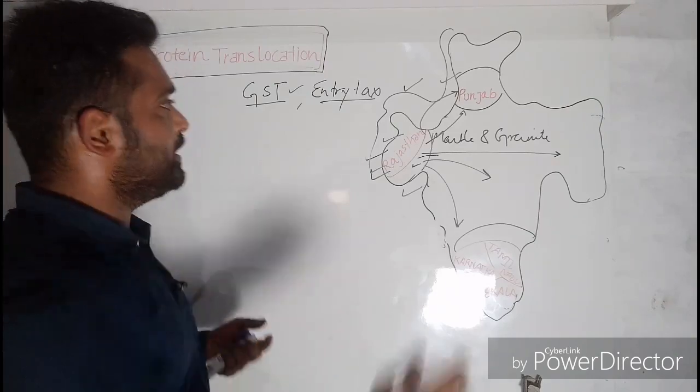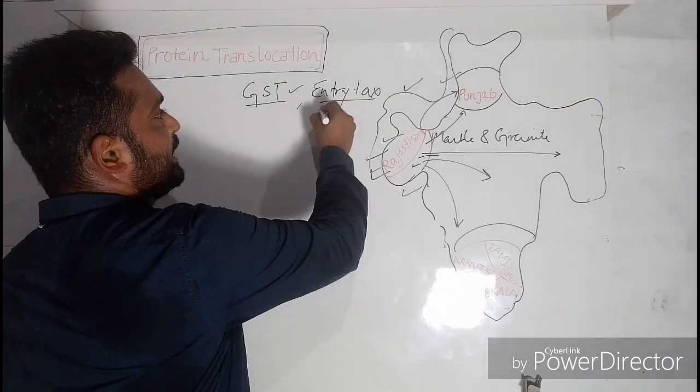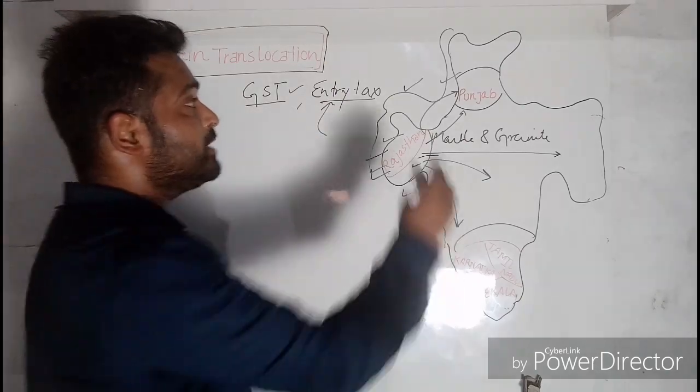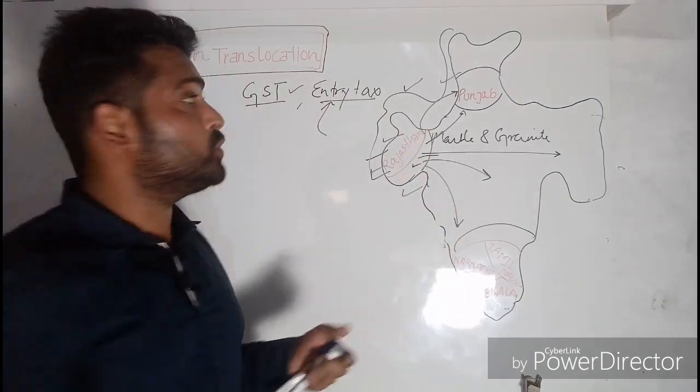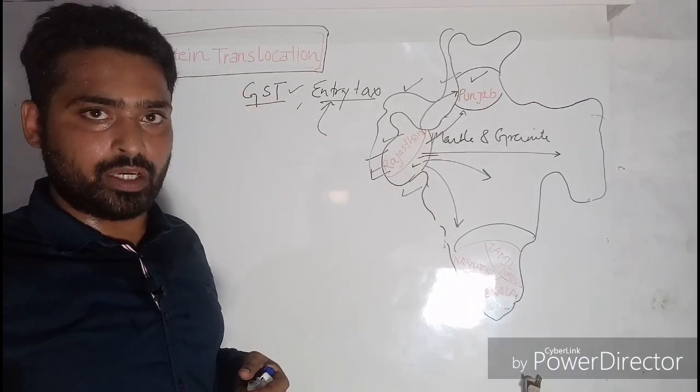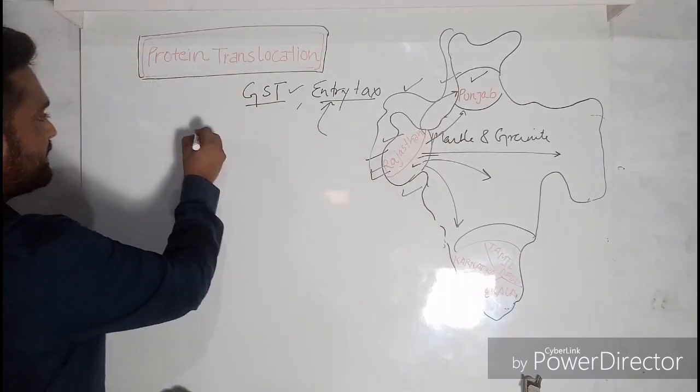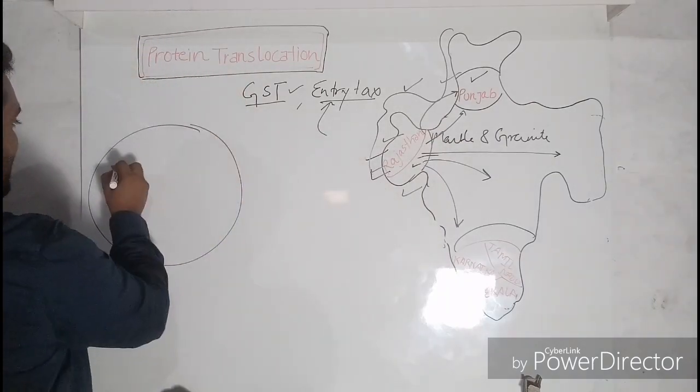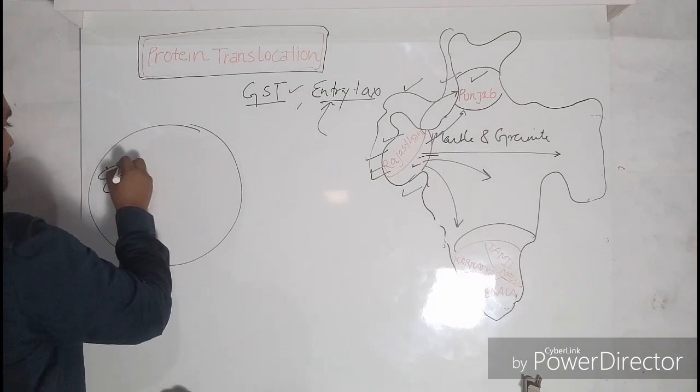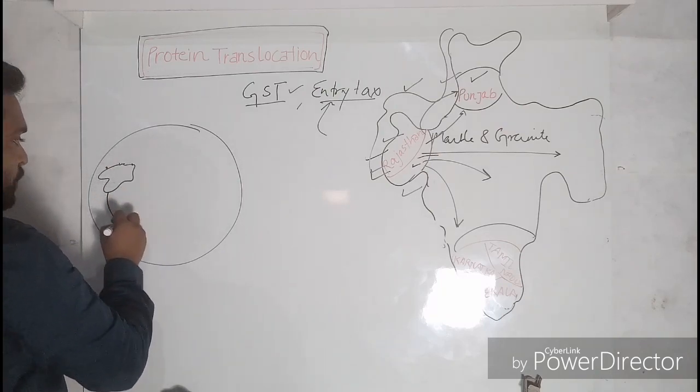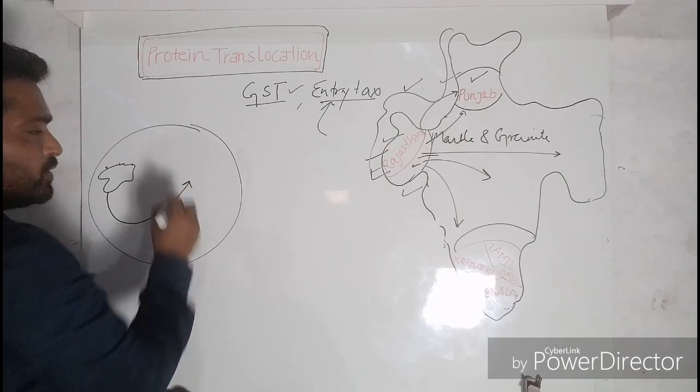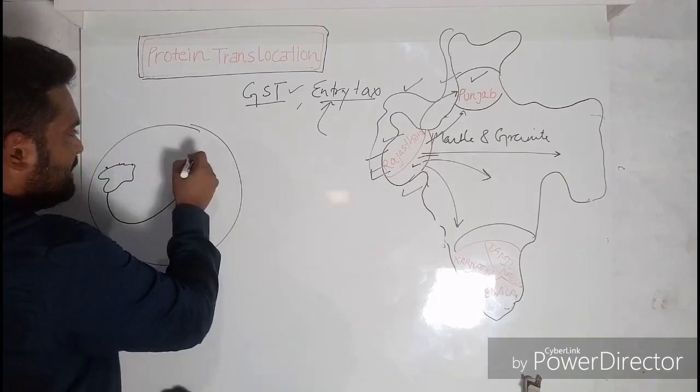So when the Rajasthan government is interested in delivering its goods to Punjab, the Punjab government would employ an entry tax for the entry of those goods into this state.